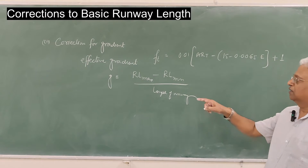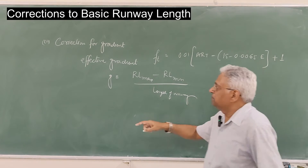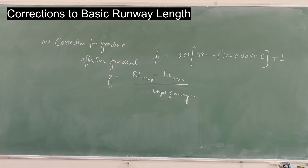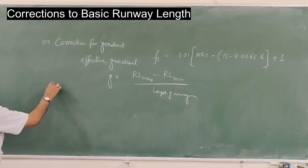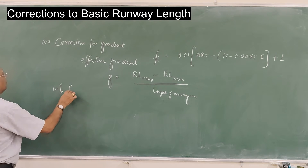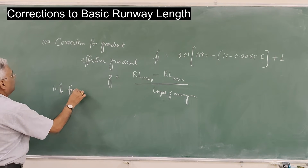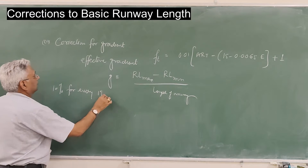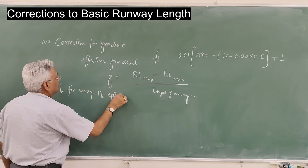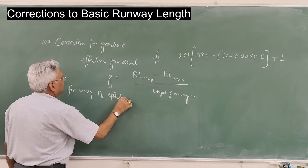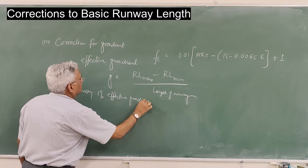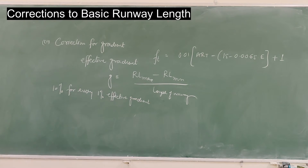After correcting basic runway length for elevation and temperature, increase it further at the rate of 10% for every 1% effective gradient. That is the correction for gradient.